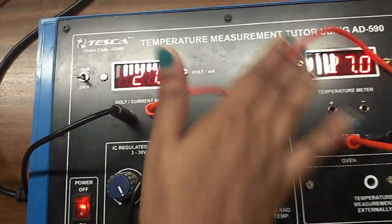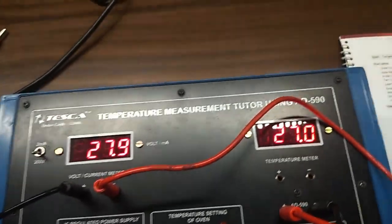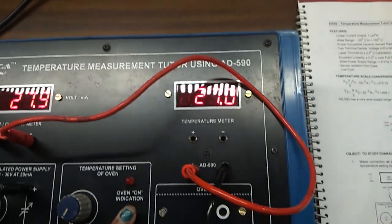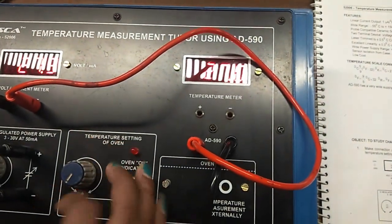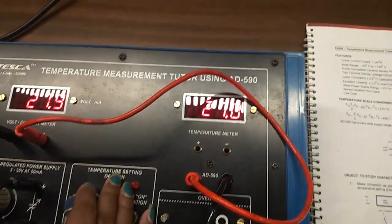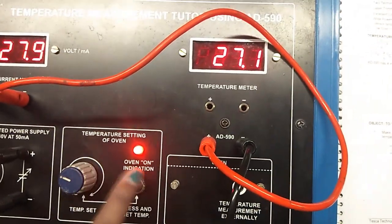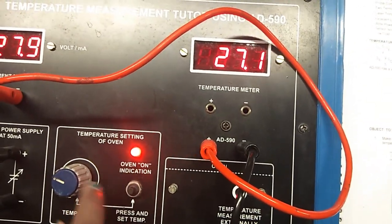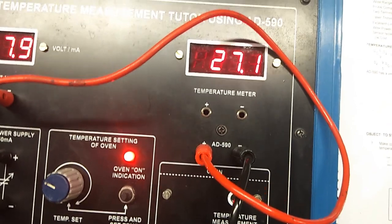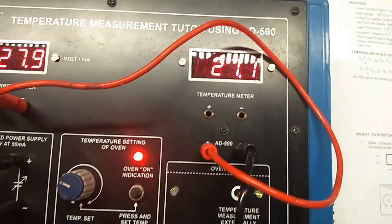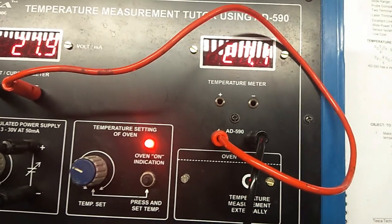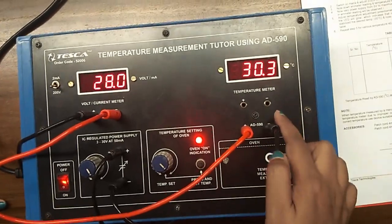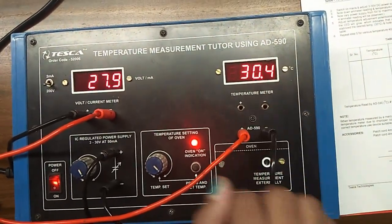To set the temperature, first press this switch. Slowly increase the temperature and set it around 30. As you can see, the LED is on. Wait for some time to reach the temperature around 30. We can see that our temperature has reached 30.